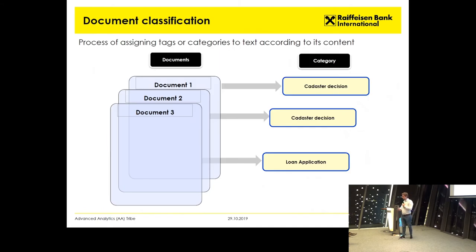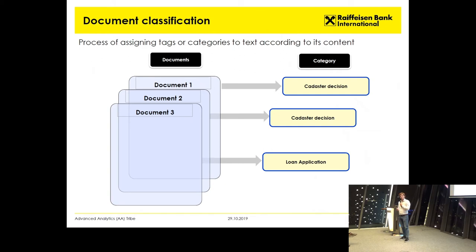We still see the potential in this part as a document type classifier. In the processing center, you could have a cadastro decision, a loan application, or whatever else. With this model, we could classify documents into their type. Once we know the document type, we can apply the relevant model for extraction of the relevant information. And now I will hand over to Daniel, who will speak about the named entity recognition model.